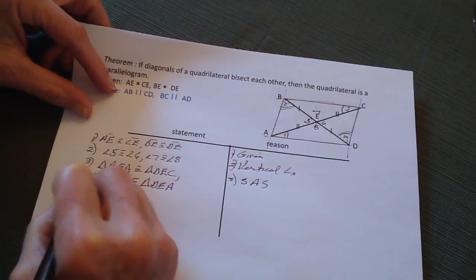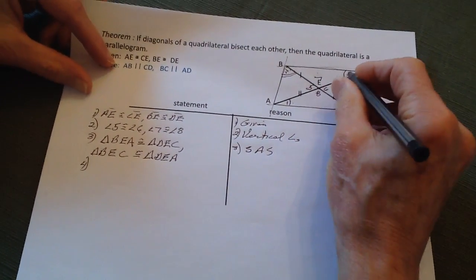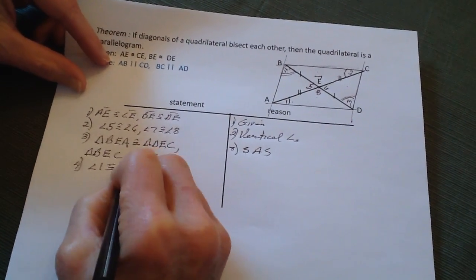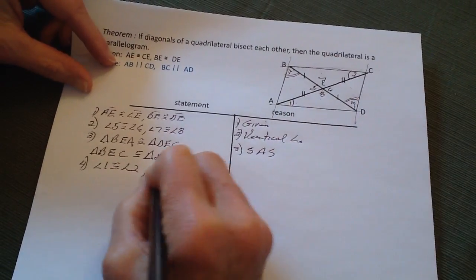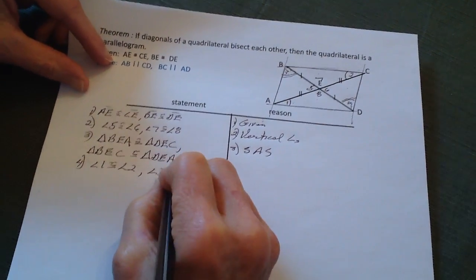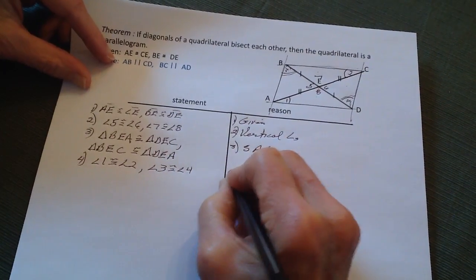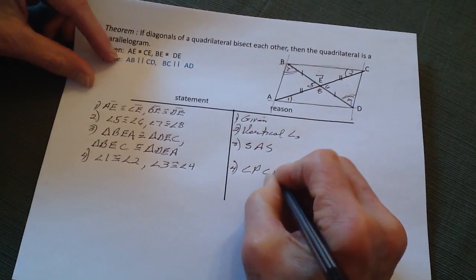Therefore, 4: we know that angle 1 is congruent to angle 2, and 3 is congruent to angle 4. And that is because of CPCTC—corresponding parts of congruent triangles are congruent.